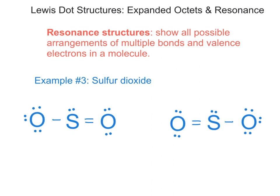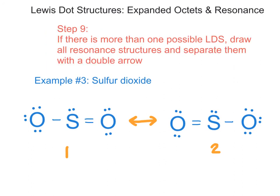To indicate and show resonance structures, we draw out all possible resonance structures for a molecule and separate them with a double-headed arrow, showing all possible arrangements of multiple bonds and valence electrons. The final step in constructing Lewis dot structures is step nine: if there is more than one possible Lewis dot structure, draw all resonance structures and separate them with a double arrow. That concludes our video lesson on Lewis dot structures, expanded octets, and resonance structures. Please bring your notes and any questions you have with you to class.